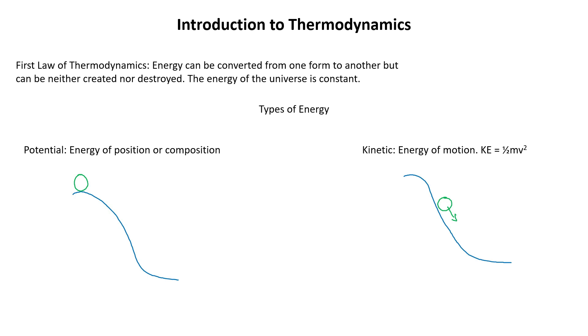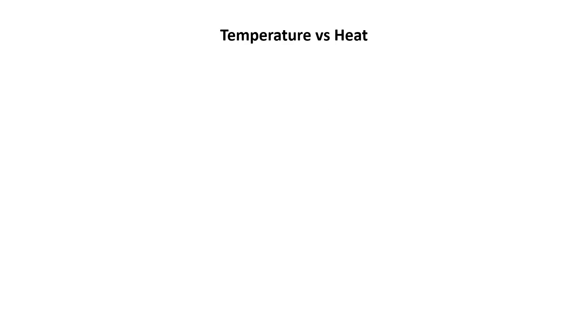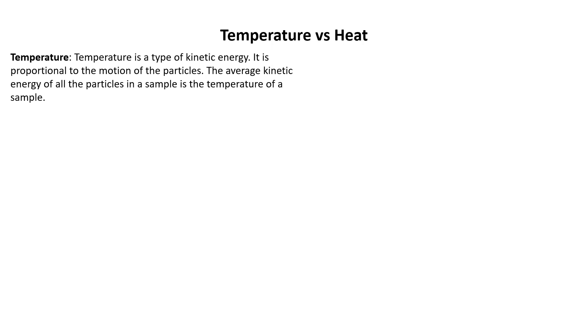One type of kinetic energy is actually temperature. So let's get a good definition for temperature. If we think about the particles of a substance, temperature is going to be proportional to the motion of those particles. Now, the average kinetic energy of the particles, remember the particles are in motion, is going to be the temperature of the sample.